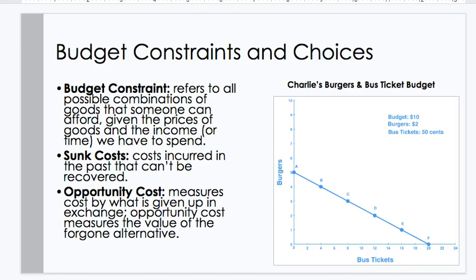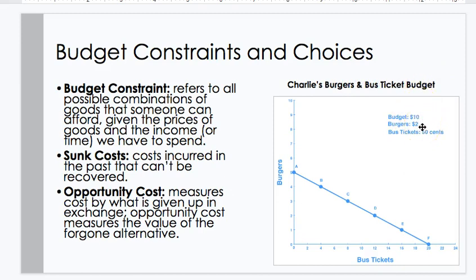Opportunity cost measures the cost by what is given up in exchange — the value of the foregone alternative. Here we have Charlie's burgers and bus tickets. The budget is $10. Burgers cost $2. Bus tickets cost $0.50 — very cheap.